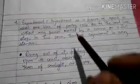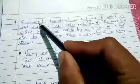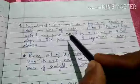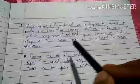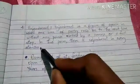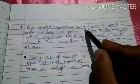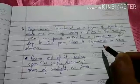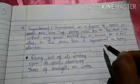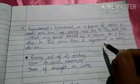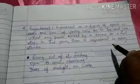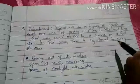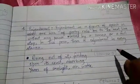Another literary device used by the poet is enjambment. Enjambment is a figure of speech in which one line of poetry rolls onto the next line without any pause marked by a comma or full stop. In this poem, there is enjambment in every stanza. It is a technique of writing in which we don't put a comma, semicolon, or any punctuation mark at the end of a line, and the meaning carries over from one line to the next.